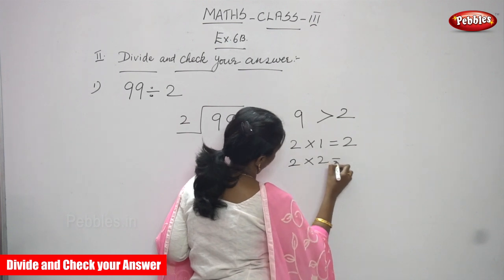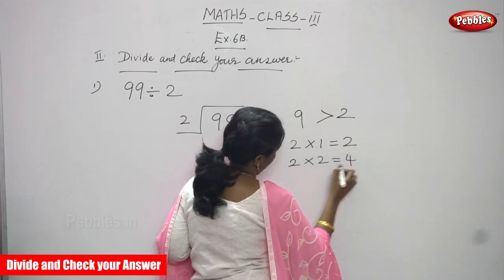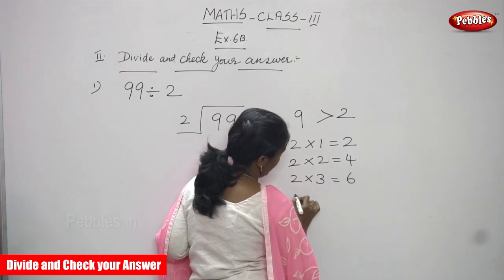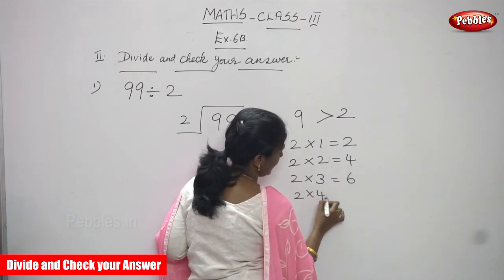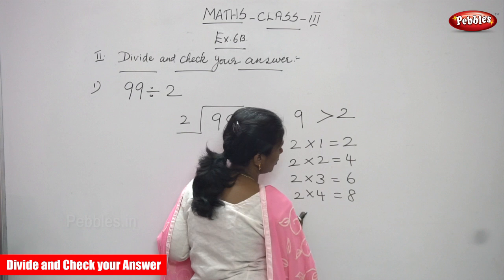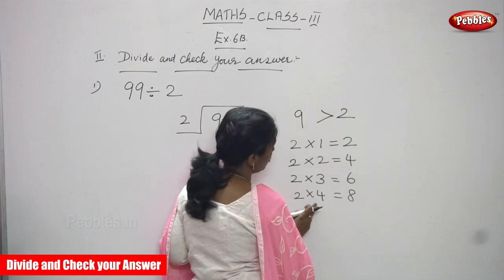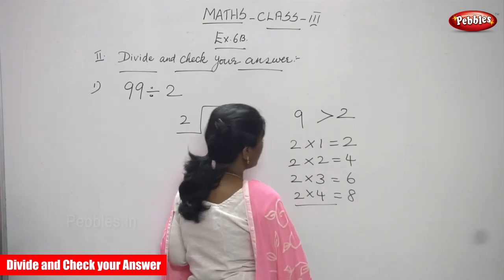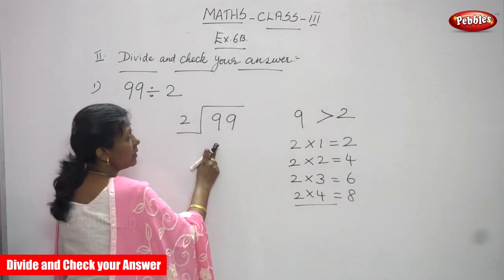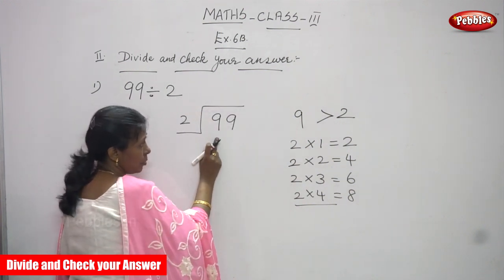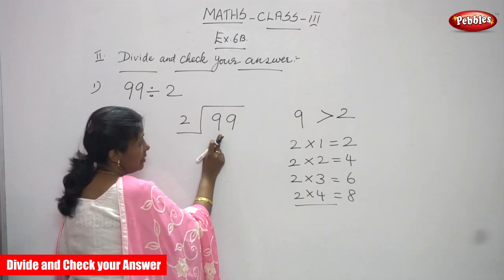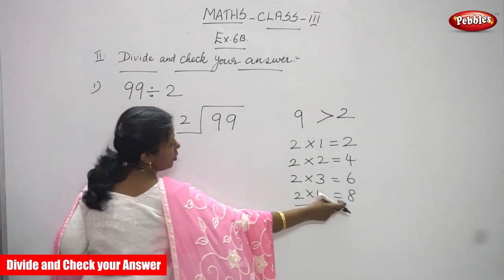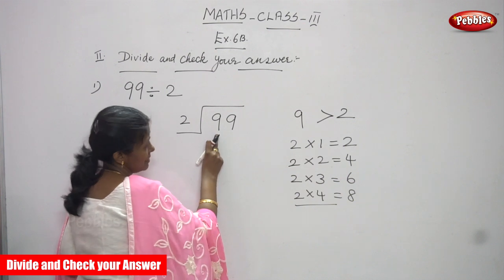2 twos are 4. 2 threes are 6. 2 fours are 8. You do not need to go further to 2 fives are 10, because you must stop up to the number that is less than the dividend. So you have to write 8 below this number.